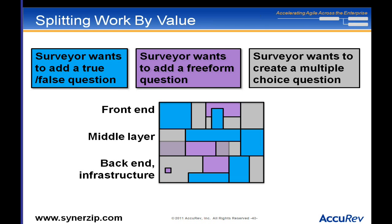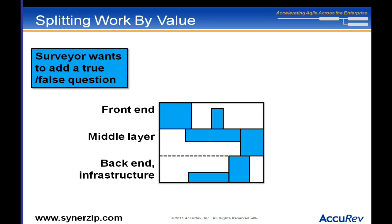I have three user stories for an online survey system: the blue — add a true/false question; the purple — add a multiple-choice question; the gray — add something else. Each requires a little work in the front end, middle, and back end. Normally from a development efficiency perspective I'd rather do all three together — no rewriting code, think things through — but from an economic perspective it makes more sense to do the story I most need first, because I want to validate that I need to keep going in this area.